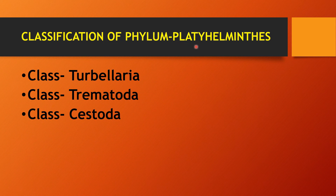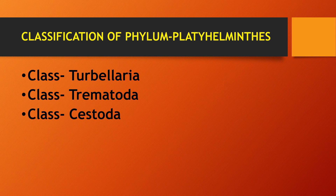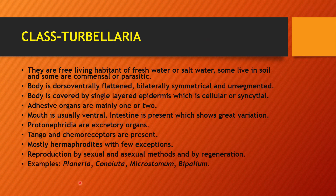Now we will see the classification of Phylum Platyhelminthes. There are mainly three classes: Class Turbellaria, Class Trematoda, and Class Cestoda. Now we will see the general characters of Class Turbellaria. Class Turbellaria is mostly non-parasitic, meaning they are free-living inhabitants — generally found in fresh water or salt water.